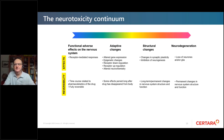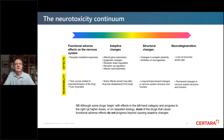In terms of reversibility, the most severe end represents permanent changes in nervous system structure and function. Although some drugs begin with effects in the functional category and progress to the right at higher doses or on repeat dosing, most drugs that cause functional adverse effects do not progress beyond causing adaptive changes.